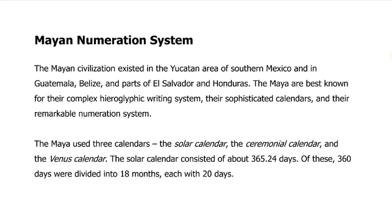Okay, now going to the Mayan numeration system. So the Mayan civilization existed in the parts of southern Mexico, as well as in Guatemala, Belize, and parts of El Salvador and Honduras. We know the Mayans by their calendars, right? We have heard of the Mayan calendar.